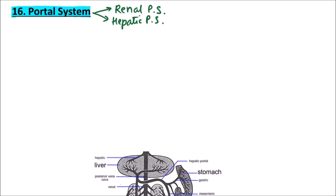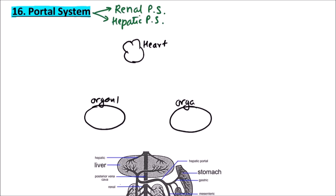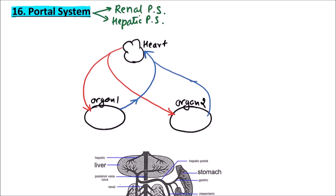First of all we'll discuss what is the portal system. Consider this is the heart and this is organ one and this is organ two. The heart is connected to organs via the arterial system, so this artery is coming out of the heart and supplying organ one, then another artery is also given to organ two. In the same way, veins collect the deoxygenated blood from organ one as well as from organ two.